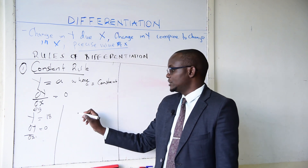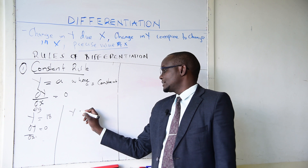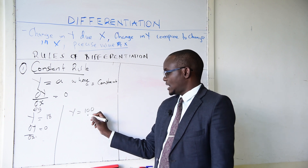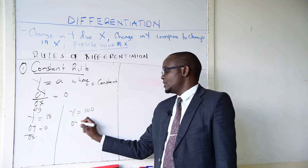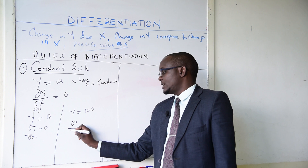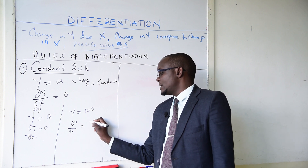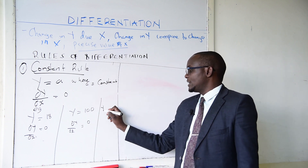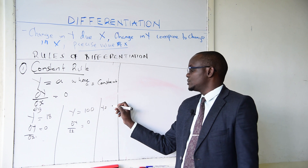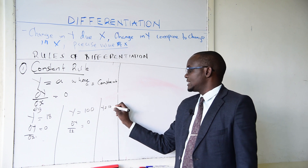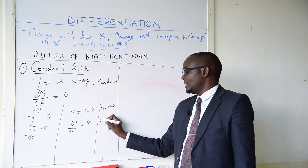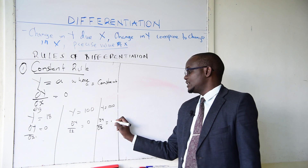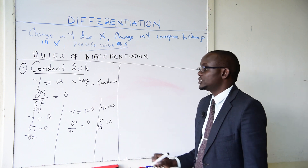You can also have y equals to 100; dy/dx will be zero. You can also have y equals to 1000; dy/dx will still equal zero.